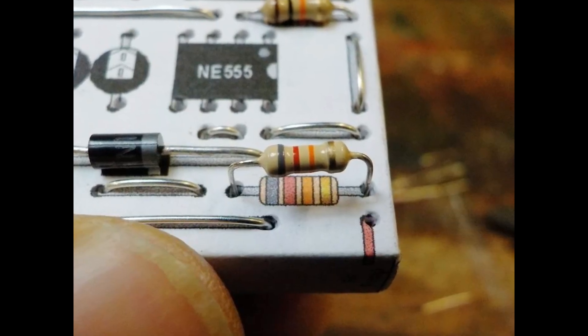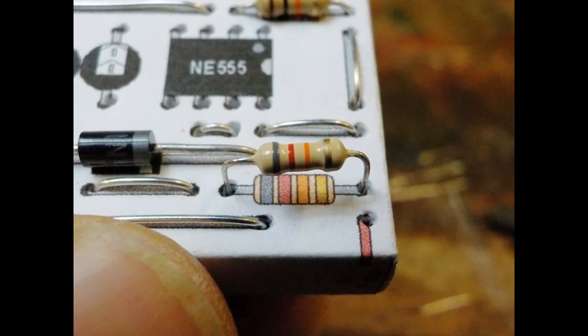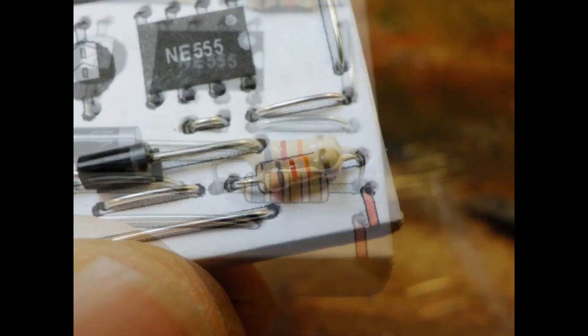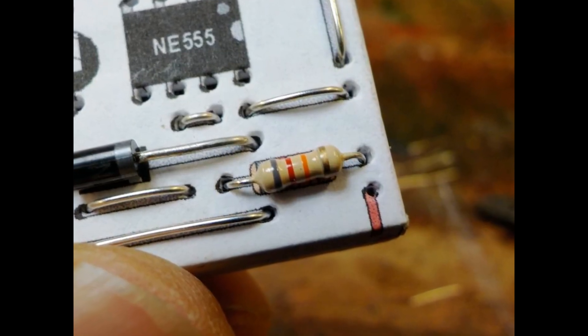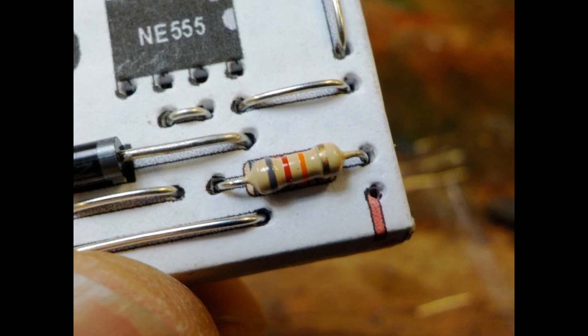Next is a resistor with a grey, red and orange stripe. Its value is 82 kilo ohms. You know the score. Bend it. Cut it. Line it up. And push it in.